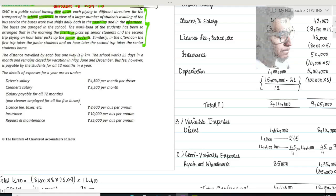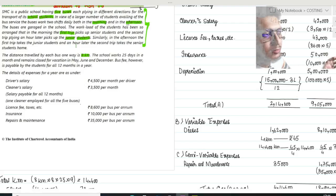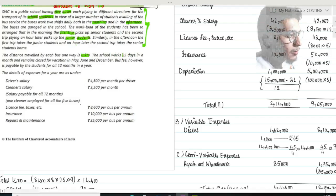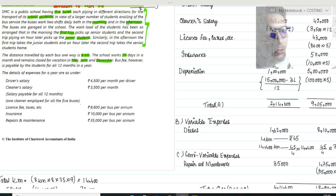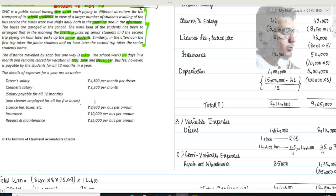The distance traveled by each bus one way is 8 kilometers. This is important information: the school works 25 days in a month and remains closed for vacation in May, June, and December. So the bus does its work for nine months. The effective duration is only nine months.